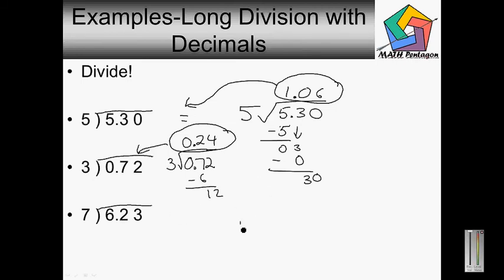And our third problem, we would write it out here. 7 goes into 6 zero times. Put the decimal point here. 7 goes into 62, the closest would be 8. 7 times 8 is 56. 62 minus 56, that is 6. Bring down the 3. 7 goes into 63 nine times. So our final answer would be 0.89 for the third problem.